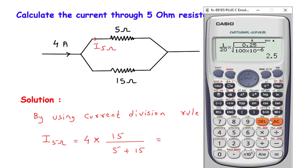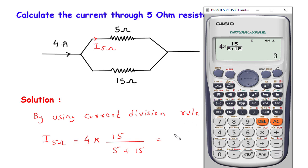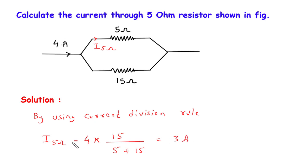Now if we solve this, it will be 4 multiplied by 15 divided by 5 plus 15, so it will be 3. So 3 ampere is the value of I5 ohm — that is, the current through this 5 ohm resistor will be 3 ampere. And if this current is 3 ampere, then the remaining current will flow through the other branch, that is the current through this 15 ohm will be 1 ampere.